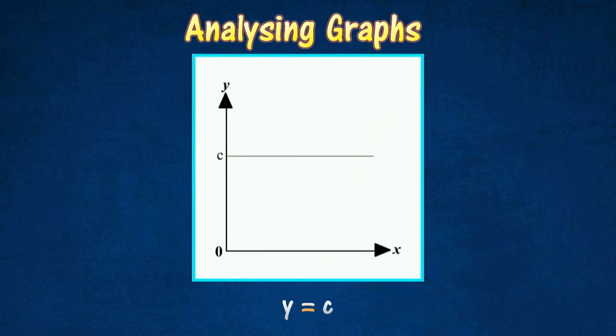In this graph, y is constant, that is y is not dependent on the value of x. The equation is y equals c. The gradient or slope of the graph is zero.